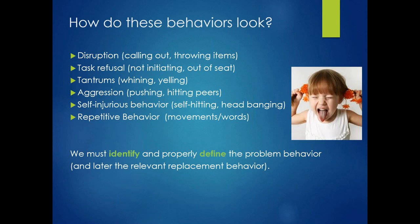What does problem behavior look like? The range is wide and very individual. Disruption might be calling out in class or throwing items. Task refusal may be not initiating a task when asked, or getting out of the seat. Tantrums might include whining, yelling, or getting under the desk. Aggression can include pushing or hitting peers, or biting. Self-injurious behaviors might include self-hitting or head banging. And in autism, we often see repetitive behaviors such as repetitive movements or repeated words.